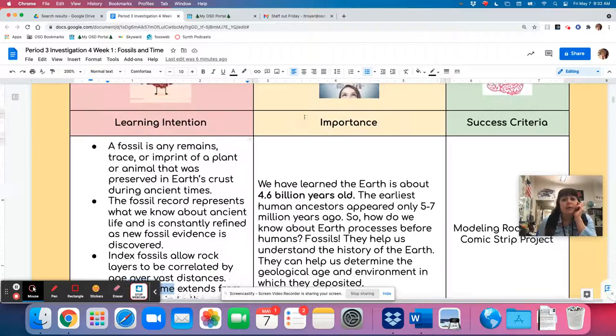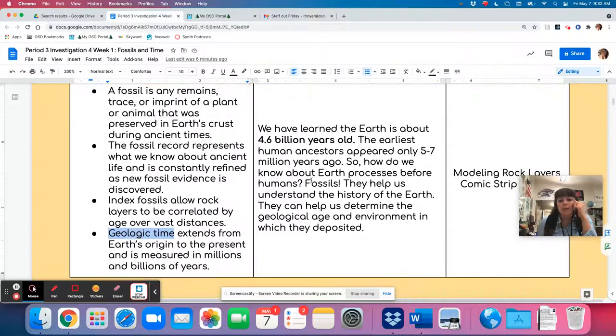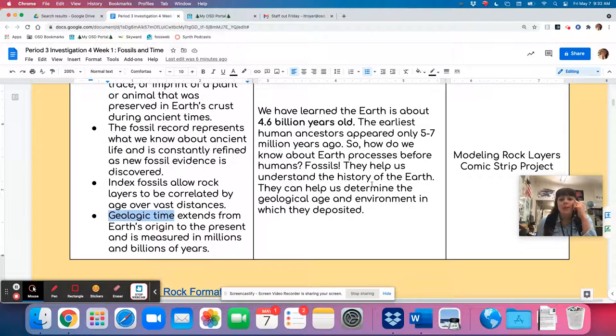Why is it important to learn about this? We've learned that the Earth is about 4.6 billion years old. The earliest human ancestors appeared only five to seven million years ago. So how do we know about Earth's processes before humans? Fossils! They help us understand the history of Earth and they help us determine the geological age and environment in which they're deposited.